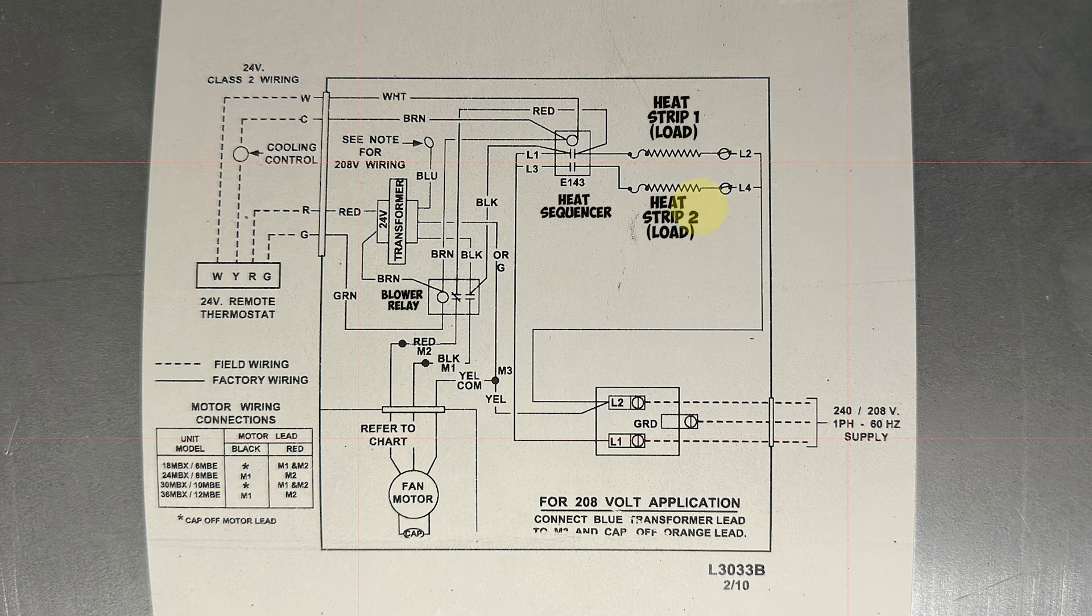And also over here is when red or black, let's say when M1 and common are going to the motor, the motor is going to run. When M2 and common are going to the motor, the motor is going to run. But only one of them can go to the motor at one time. And I'll try to explain this so that we can see what's going on and how I determined just off doing those tests I just did, that the heat sequencer is bad.